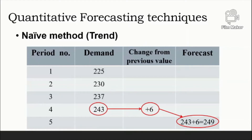Although the naive approach may appear too simplistic, it is a legitimate forecasting tool. Its advantages are virtually no cost, it is quick and easy to prepare, and easily understandable. The main objection is its inability to provide highly accurate forecasts. However, even if other techniques offer better accuracy, they almost always involve greater cost. The accuracy of a naive forecast can serve as a standard of comparison to judge the cost and accuracy of other techniques.